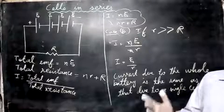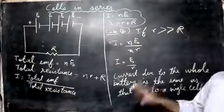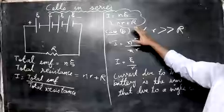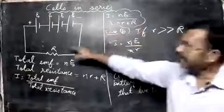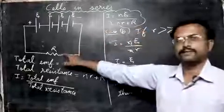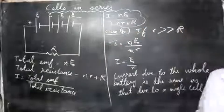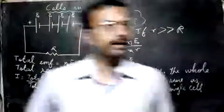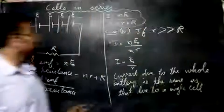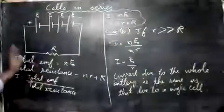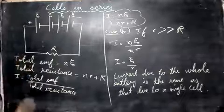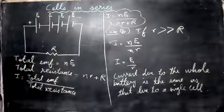So to summarize: when cells are connected in series, the voltage increases, and the current depends on the external resistance. Make a note of this. Thank you for watching.